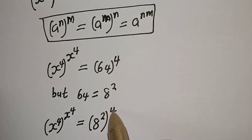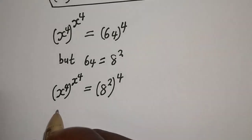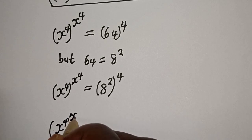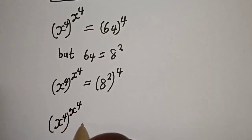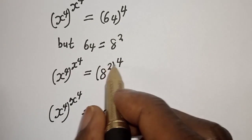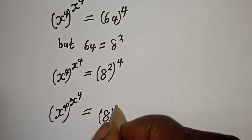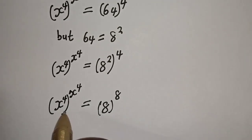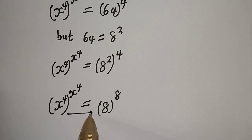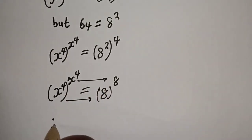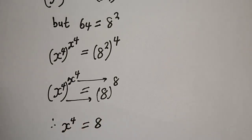Then this is 2 multiplied by 4. Now we have S raised to power 4, to the power of S raised to power 4, is equal to 8 raised to power 2 times 4 — that is 8. At this point, the base is equal to 8 and the exponent is equal to 8. Therefore, S raised to power 4 is equal to 8.